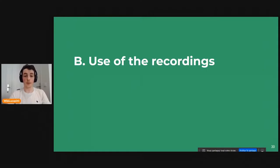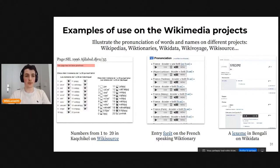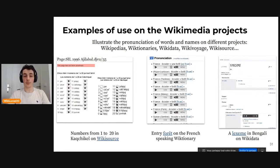The recordings are used in and out of Wikimedia projects. On Wikimedia, they illustrate words or names on any project — names on Wikipedia, words on Wiktionaries, on Lexemes, on Wikidata. For example, there's a dictionary from the Summer Institute of Linguistics for Kaqchikel where contributors added LinguaLibre recordings. There's also the French Wiktionary entry for the word 'forêt' with many pronunciations, and an example of a Lexeme with a pronunciation by one of our most prolific contributors, Tito Dutta.